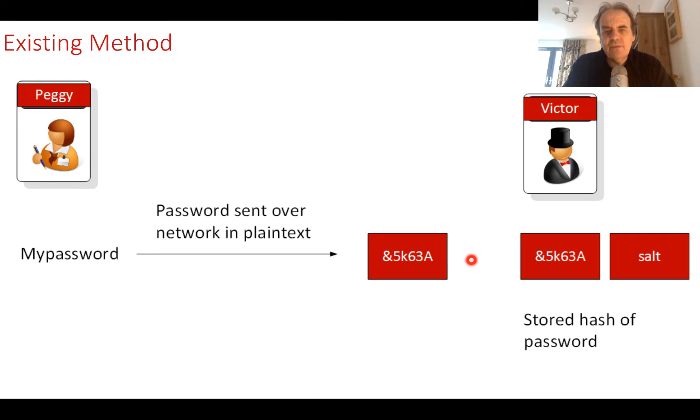Someone could be listening or a process could snoop her password. Also, an intruder could take the salt and the hash value offline and use a cracker to search through a dictionary of words, add the salt, and get the same hash value. Once they have that, they have Peggy's password.